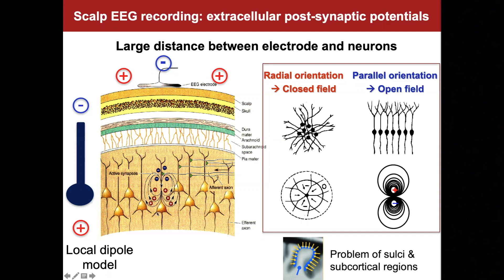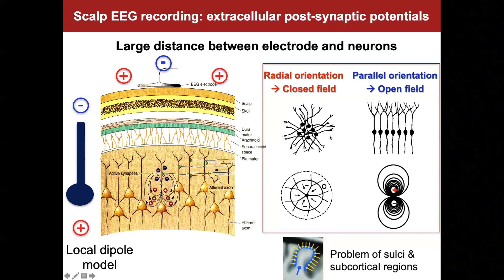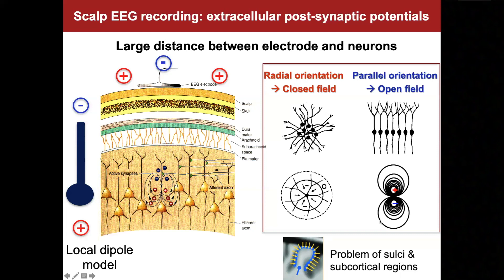Several conditions must be met to record something on the scalp. You need a large enough dipole, which means a large enough population of neurons generating it. You also need alignment — if you have a large number of cells oriented randomly or radially, it causes a closed electric field and you don't record anything at a distance. You need a parallel orientation to record a macroscopic dipole. This can become a critical issue when recording neuronal activity around cortical gyri, because the facing parts of sulci can cancel each other in terms of electrical signal.